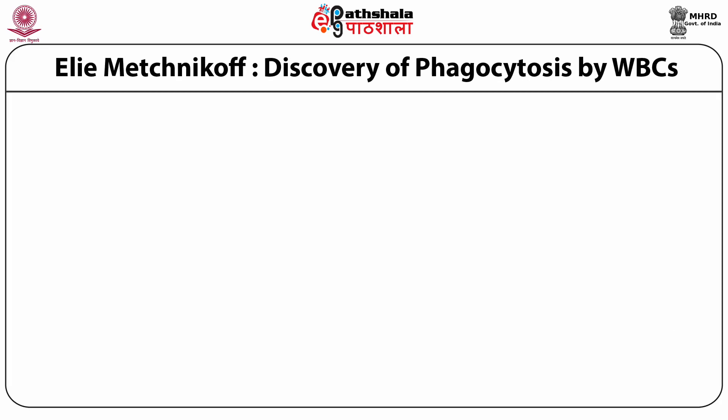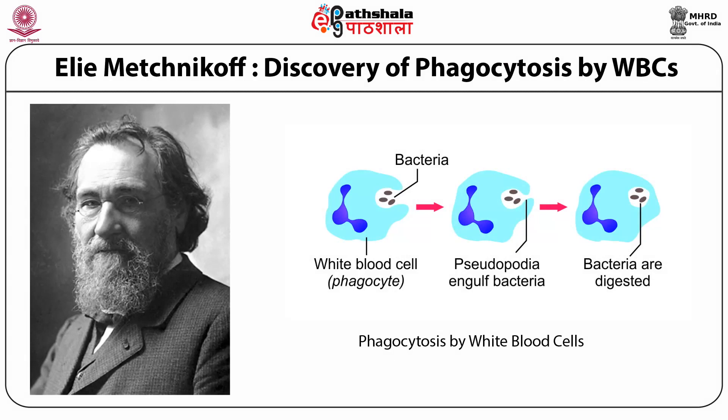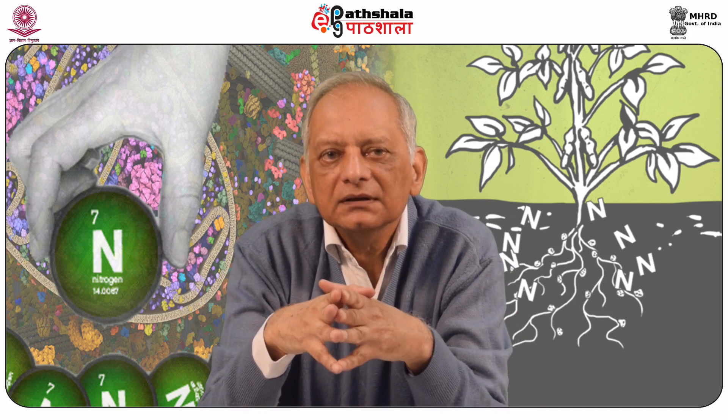In 1893, a heat-labile component thought to be antibodies was later recognized as complement. Also in 1893, Russian scientist Élie Metchnikov showed that white blood cells of vertebrates could cause phagocytosis of some fungal spores, thereby starting a fierce debate about humoral versus cellular agents involved in the defense against infections.